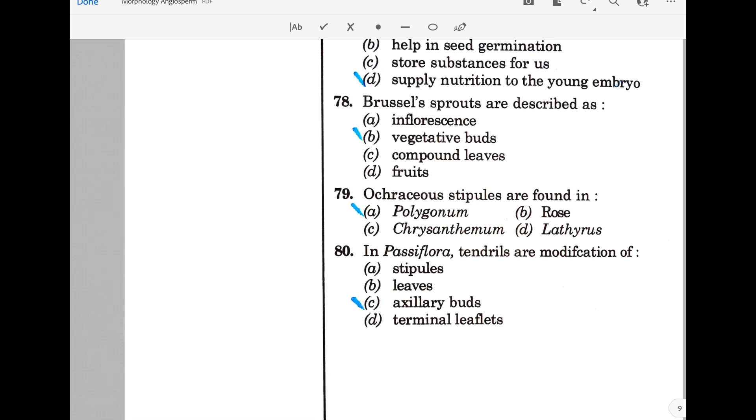Ochreaceous stipules are found in Polygonum. In Passiflora, tendrils are modification of axillary buds. With this, I have completed part one of the morphology of angiosperms. Next part is coming with another 80 questions from 81 to 160. If you like the series, click on the playlist and check out other videos. Share, subscribe to our channel, and like our videos. Thank you very much.